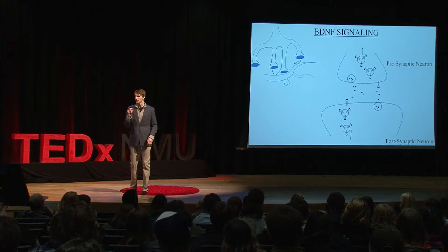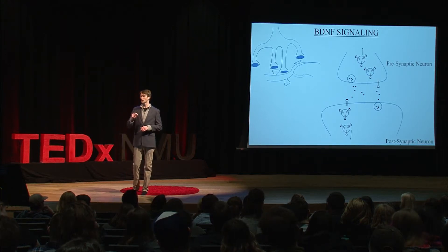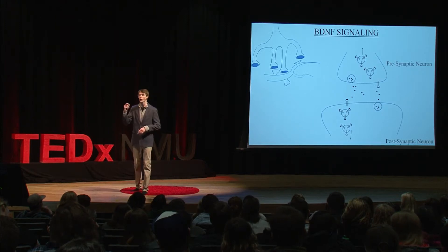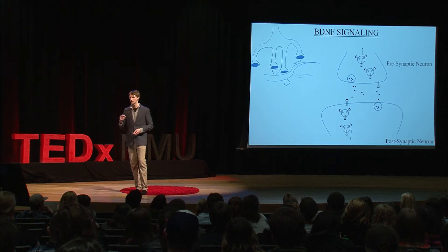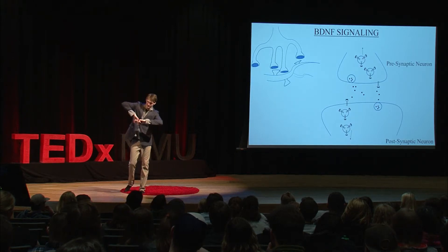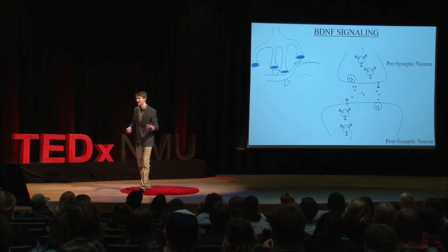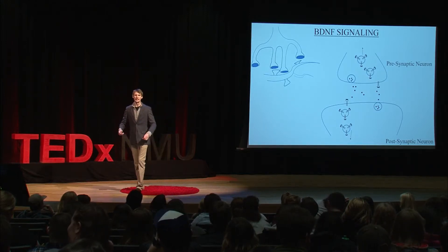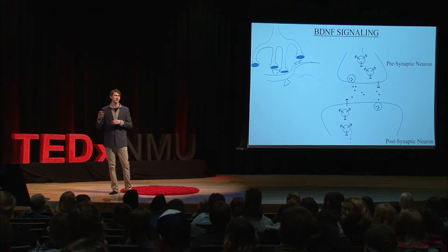As a neuron fires and communicates, it releases BDNF back and forth. BDNF can be transported either backwards from the post-synapse to the pre-synapse — called retrograde signaling — or anterograde, similar to a neurotransmitter, from the pre-synapse to the post-synapse. This is essentially a signal saying 'I received your communication, let's continue to strengthen our relationship.' As this happens, it strengthens these connections, starts to form circuits and networks, and this is the foundation of learning and memory. BDNF is crucial to the development, function, and maintenance of the nervous system.